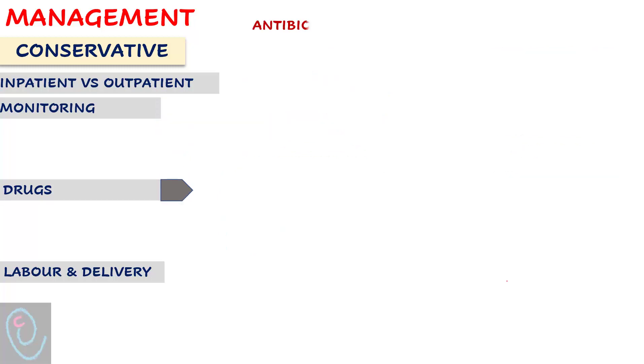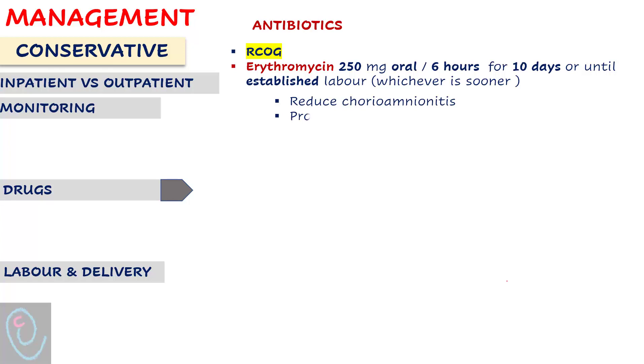Provide erythromycin 250 mg oral every 6 hours for 10 days or until established labor, whichever is sooner. This reduces chorioamnionitis, prolongs latency, and improves neonatal outcome.